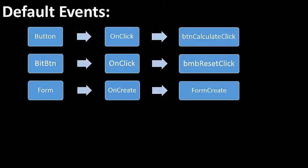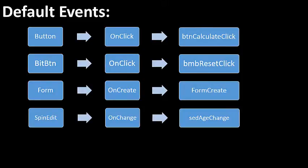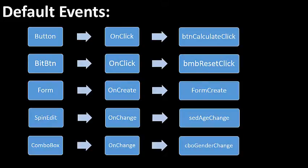The form's default event is onCreate, invoked when a form is loaded in memory. If you double click on a form in design time, Delphi links the form's onCreate event to an event handler called FormCreate. A spin edit's default event is onChange, invoked when a user changes the value displayed in the spin edit. If you double click on a spin edit called SEDH in design time, Delphi links its onChange event to an event handler called SEDHChange. A combo box default event is also onChange, and double clicking on a combo box called CBOGender links its onChange event to an event handler called CBOGenderChange.